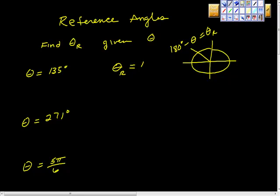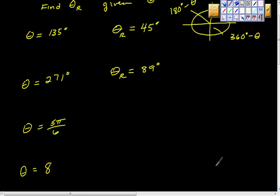Okay, the next one. If we get theta is 271 degrees, then the reference angle is what? What quadrant, Josh? Quadrant 4, so we're in here somewhere. And what's the rule? 360 degrees minus theta, isn't it? So 360 minus this is 89 degrees is our reference angle.